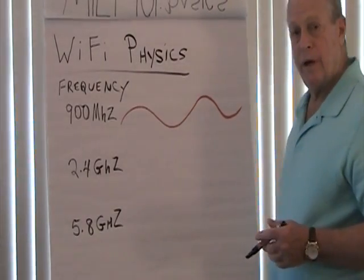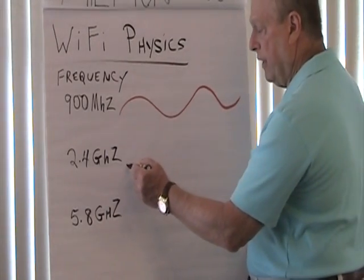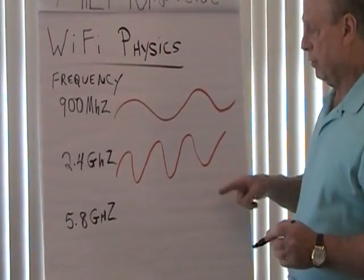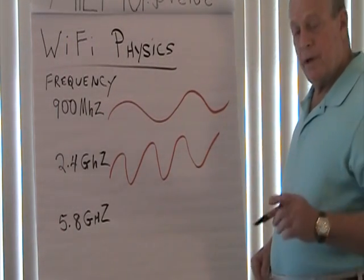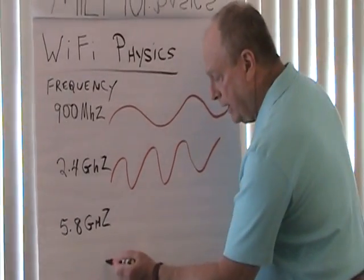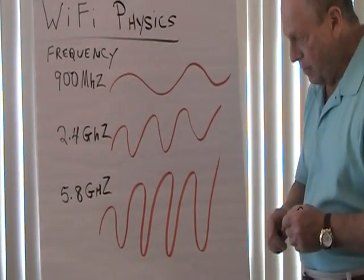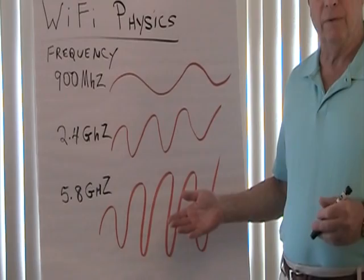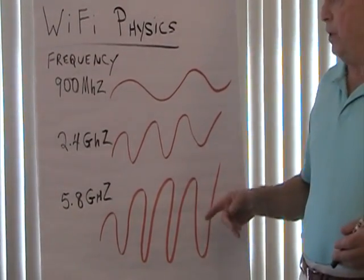2.4 gigahertz is most Wi-Fi equipment, as well as microwave ovens, cordless mice, etc. That sine wave is a little bit more pronounced, so it doesn't have the penetration benefits, but it does have good distance and throughput. The other frequency is 5.8 gigahertz, and we use that for long-range wireless backhaul. That sine wave is even more pronounced, but it's a good frequency for long-range backhaul because it's not used by very many pieces of equipment. We'll get into more detail later on regarding equipment and frequency.